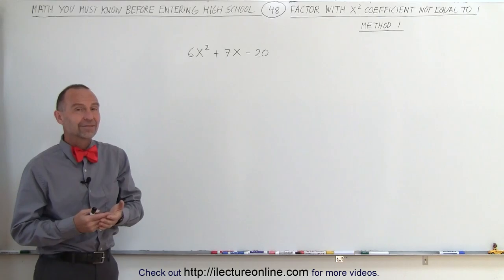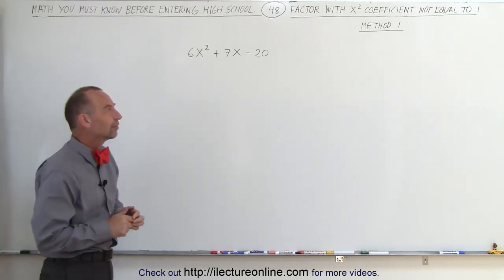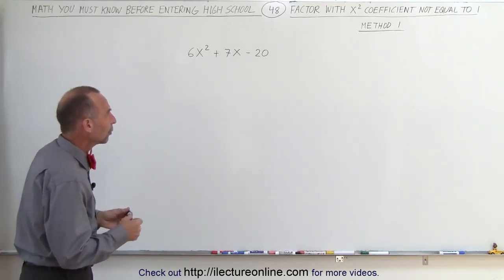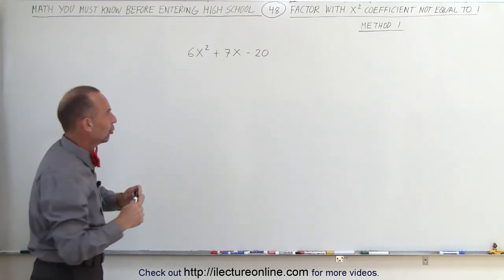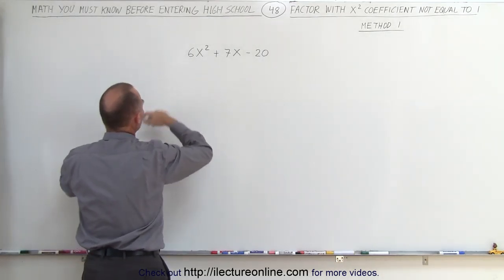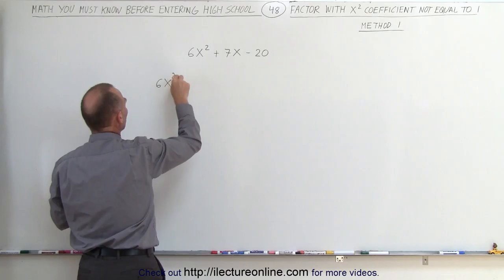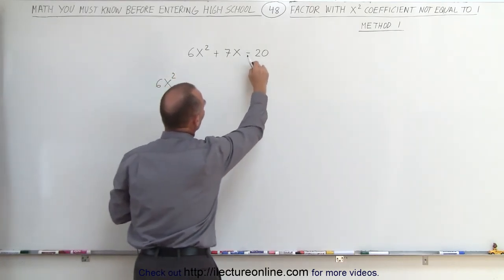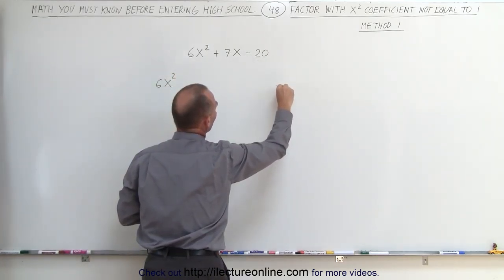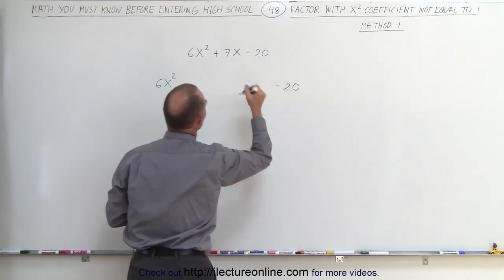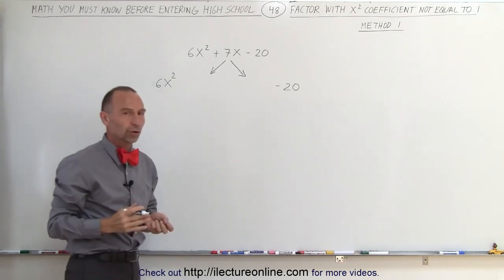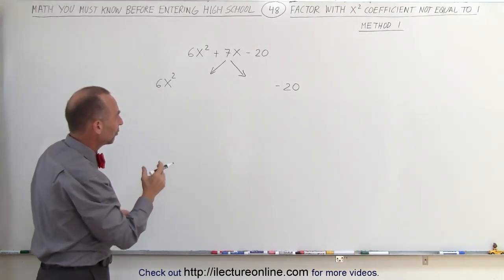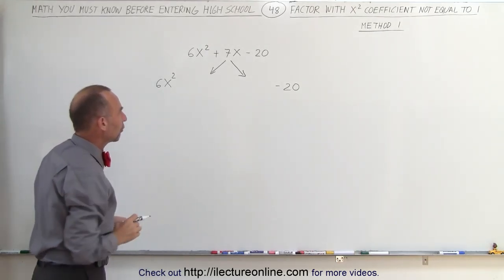There are different techniques. Let me show you the first — let's call it Method 1. What we're going to do is rewrite this trinomial and turn it into a polynomial with four terms. In other words, we take the 6x-squared and write it over there, give it some more room in the middle, take the minus 20 and write it over there, and then we're going to take the middle term and write it as the sum of two middle terms — two terms with the variable x with a numerical coefficient in front.